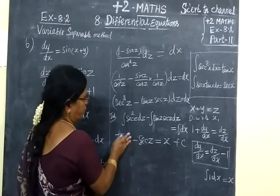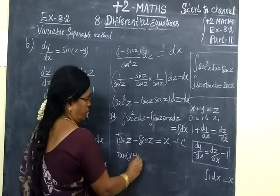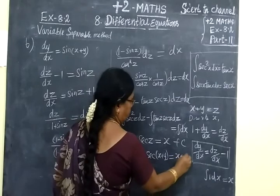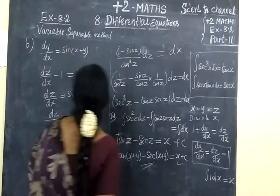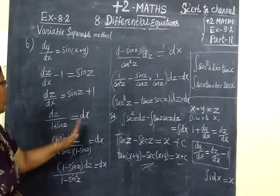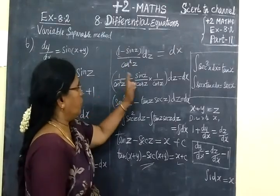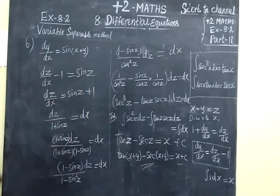Now we replace z with x plus y. So the final answer is: tan(x plus y) minus sec(x plus y) equal to x plus C. This is the correct answer for this problem. Next we will see part 12.